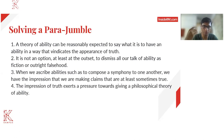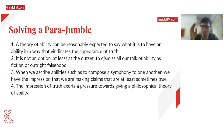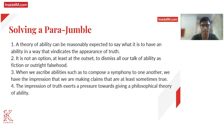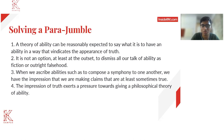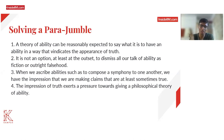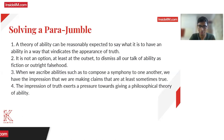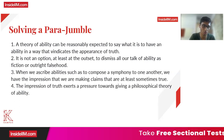Even if the vocabulary is too hard or you don't understand the exact meaning of the passage, that is fine. You just have to understand whether one sentence will come before or after the next. The first sentence is: 'A theory of ability can be reasonably expected to say what it is to have an ability in a way that vindicates the appearance of growth.' Making it simpler — a theory of ability can be expected to say something about the appearance of truth. It can be a starter; not completely eliminating it.